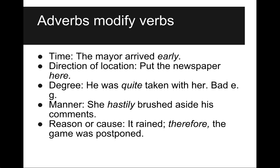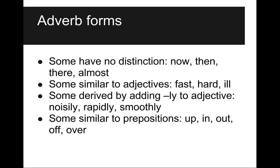Adverbs modify verbs. They might indicate time, like 'the mayor arrived early.' They might indicate direction or location — 'Put the newspaper here.' They might indicate degree — 'He was quite taken with her.' They might indicate the manner something was done — 'She hastily brushed aside his comments.' Or they might indicate reason or cause — 'It rained, therefore the game was postponed.' Adverb forms: some have no distinction, like now, then, there, or almost. Some are similar to adjectives — fast, hard, or ill. Some are derived by adding '-ly' to an adjective — noisily, rapidly, smoothly — and those '-ly' words are usually adverbs. Some are similar to prepositions — up, in, out, off, and over.